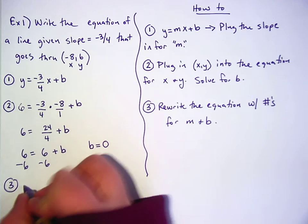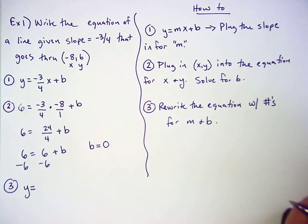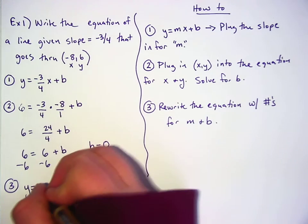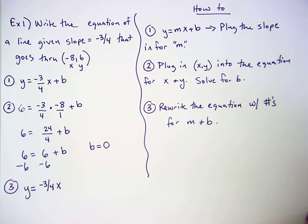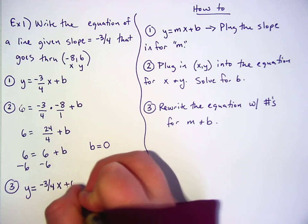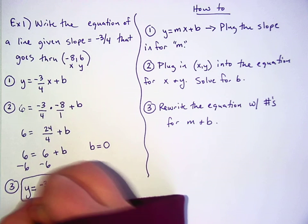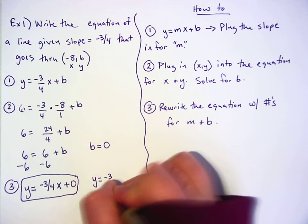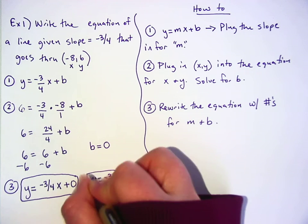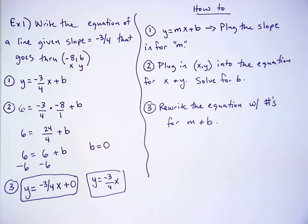So I'm going to write my final answer. Y equals—what was the slope again, guys? Negative three-fourths. X. Plus what? What's the b? Plus zero. You could either write it like this because you want it to look like y equals mx plus b. Or you could just write it like this, because there is no b this time, so. Either one is fine.